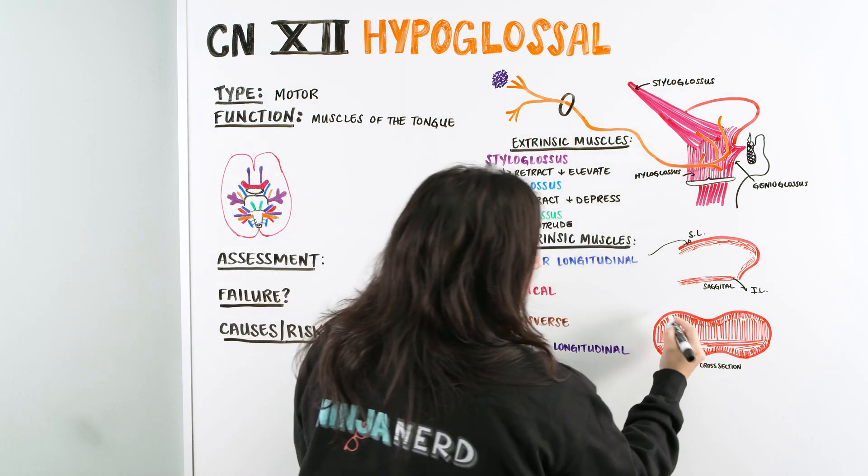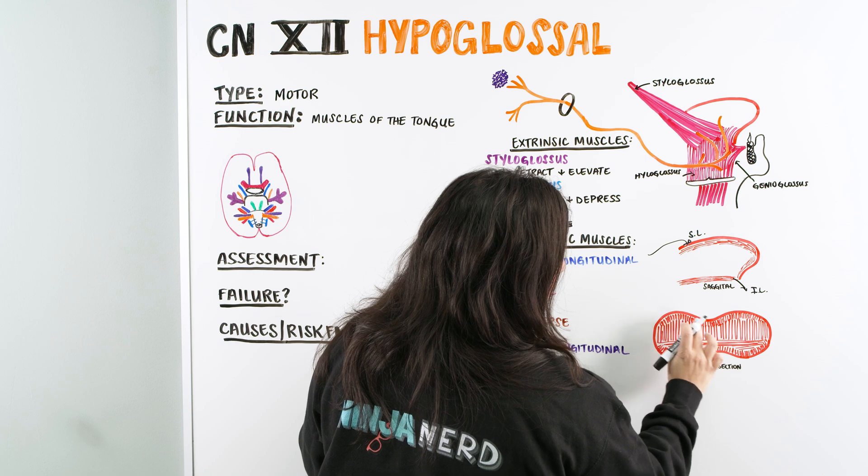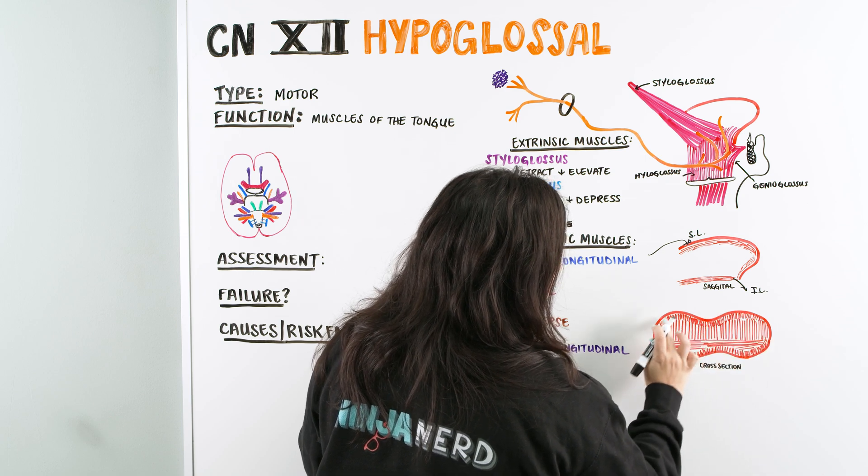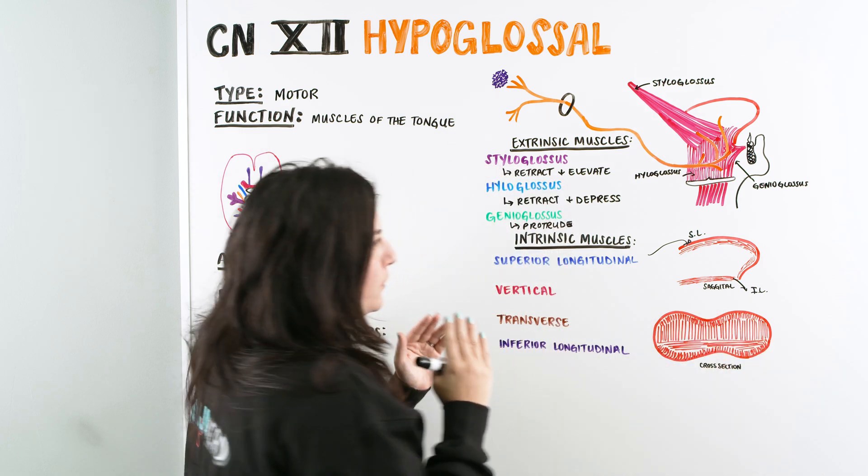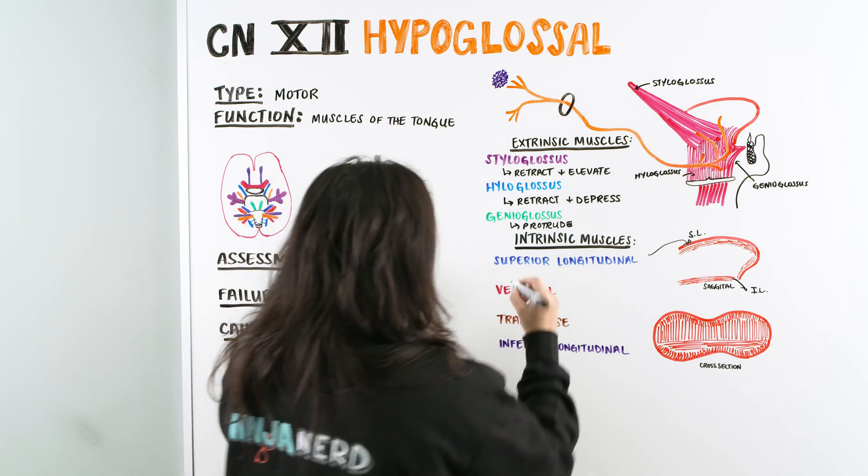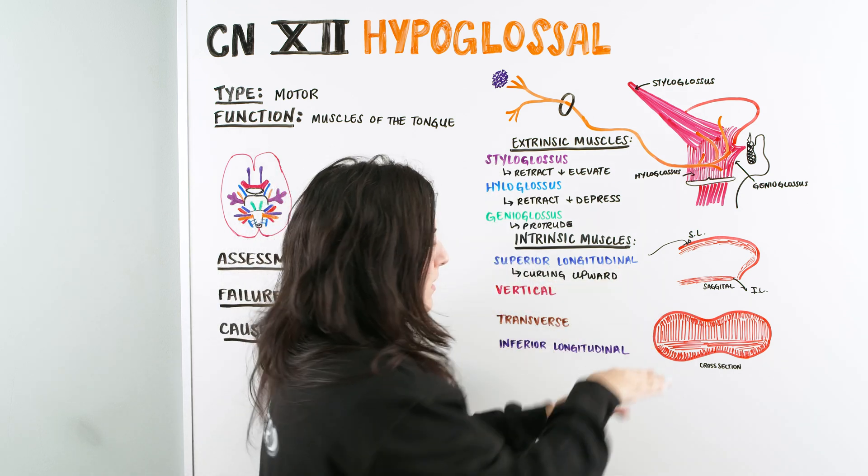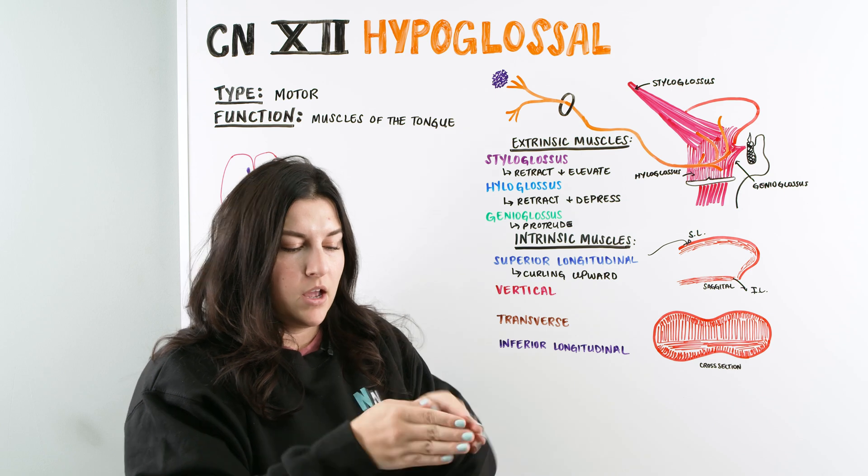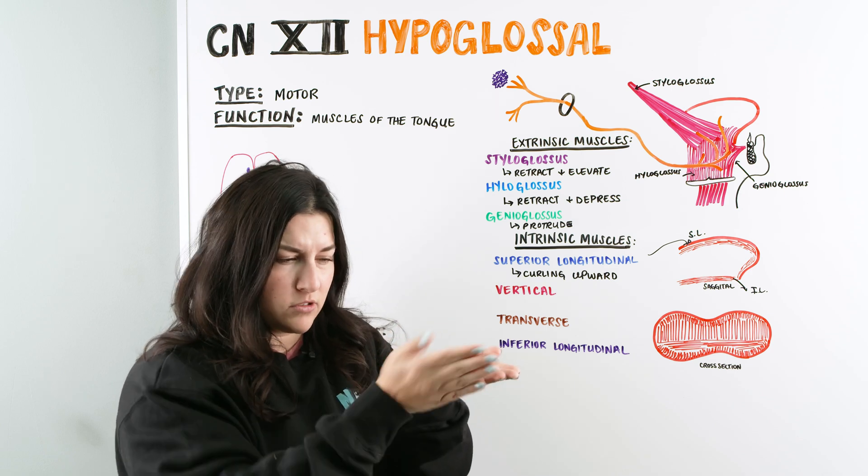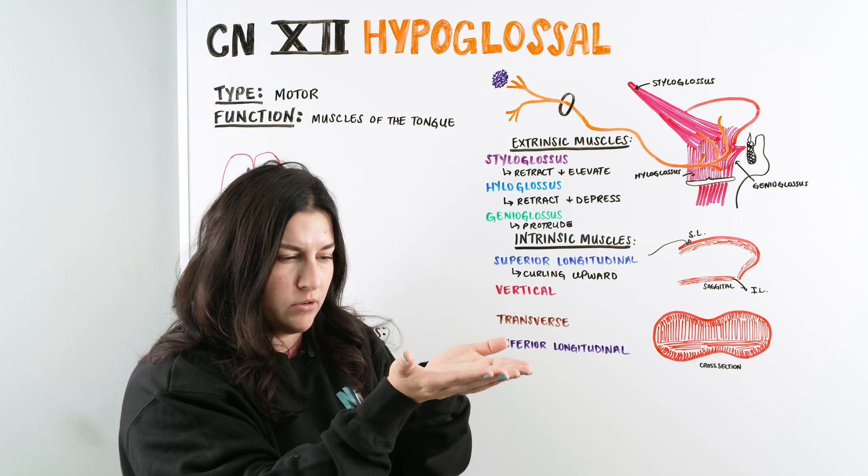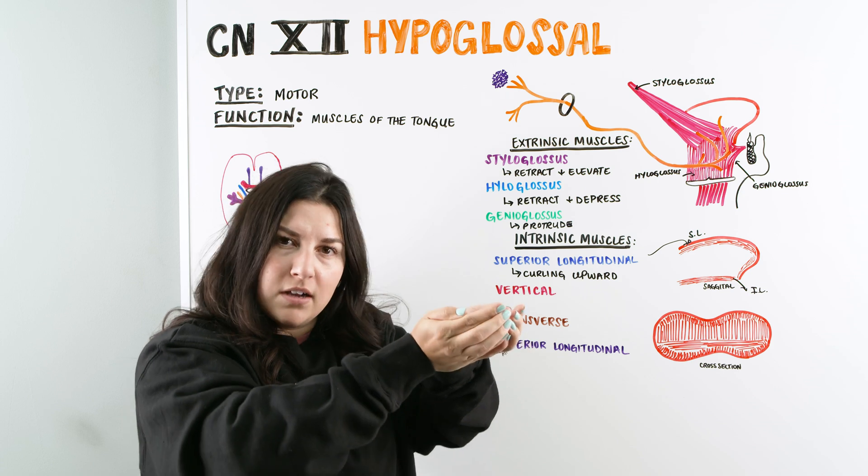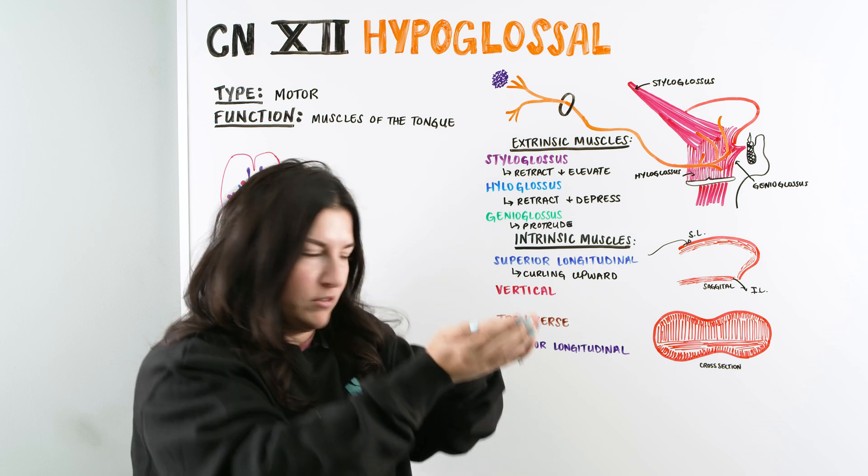So, superior longitudinal. This is muscle right here on the top. You can see these striations along the top here. And what this allows is it allows for curling of the tongue upward. And you can see that, right? If you look at the tongue, right? If you're picturing the tongue, if you're looking at the top, and we're seeing all these muscles on top, if this muscle on top was going to contract, it's going to pull the tongue kind of up into that rounded shape.